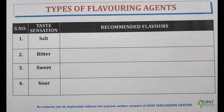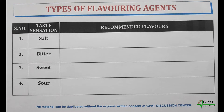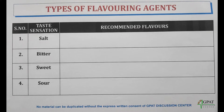In this video, we'll discuss various types of flavoring agents. Flavoring agents are divided into four types: Salt category, Bitter category, Sweet category, and Sour category.